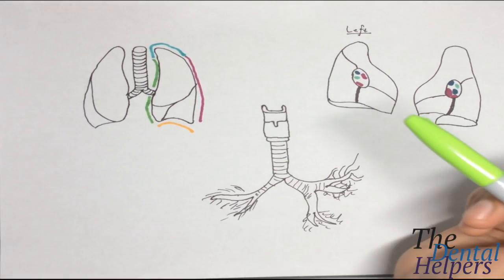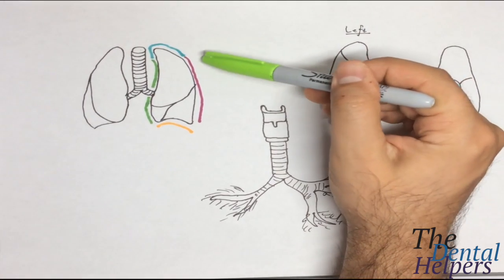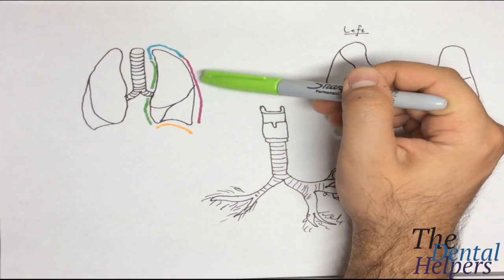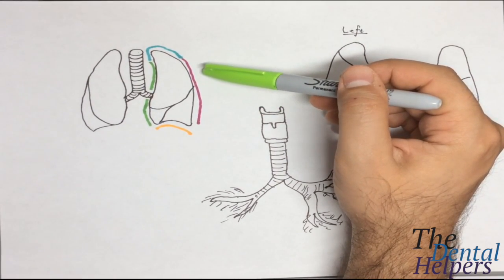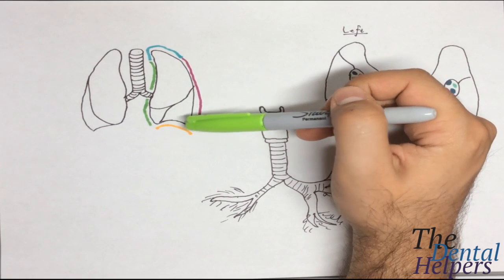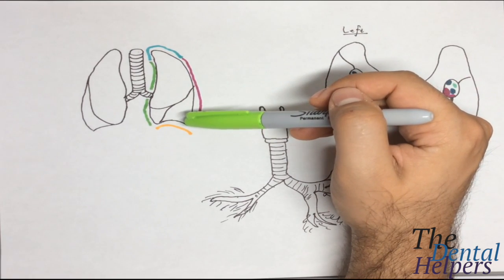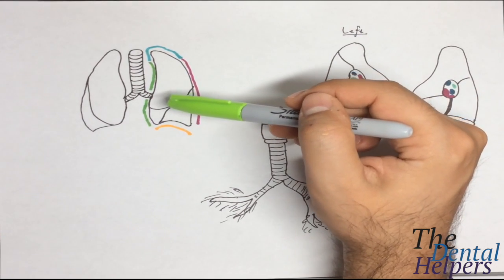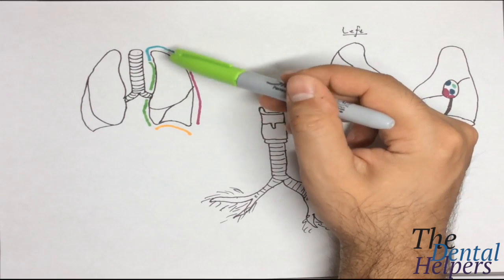As I said, we have the costal which is right here, and this is going to line the inner surface of the thoracic wall. The diaphragmatic is going to line the superior surface of the diaphragm, and the mediastinal parietal pleura is going to line the mediastinum.